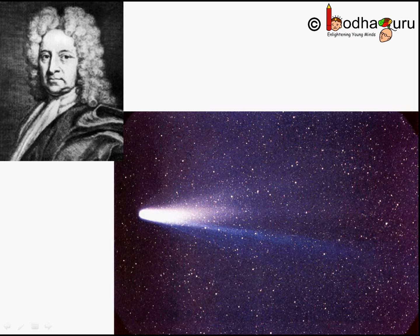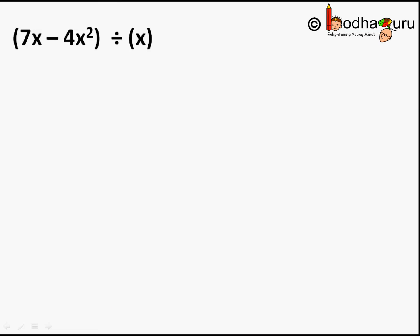Let's take a simple example. Let us divide polynomial 7x - 4x² by another polynomial x. That is, divisor is a monomial.